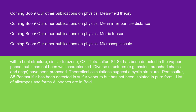Theoretical calculations suggest a cyclic structure for S4. Pentasulfur (S5) has been detected in sulfur vapors but has not been isolated in pure form. A list of allotropes and forms — allotropes are in bold. Thank you.